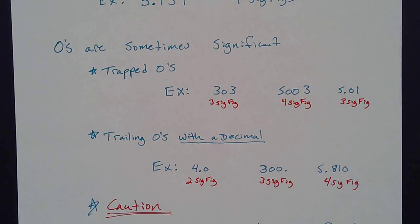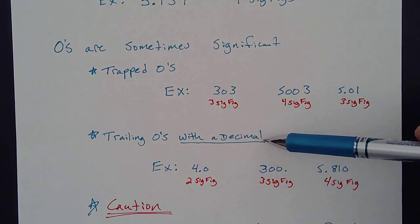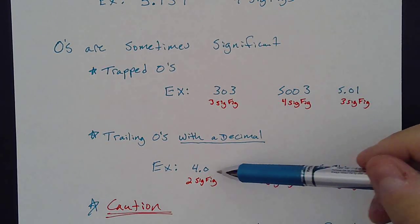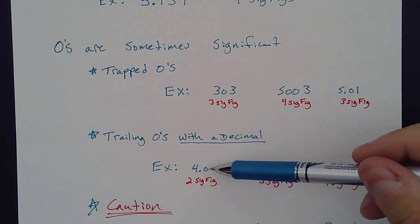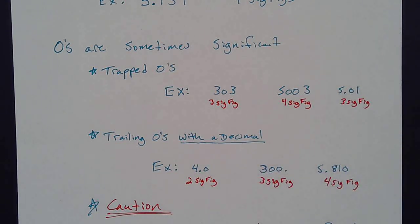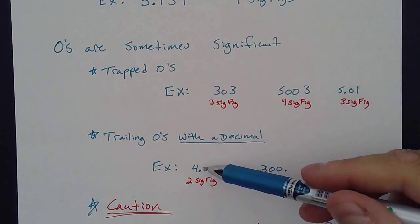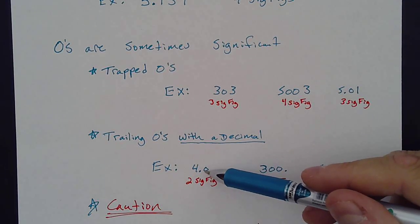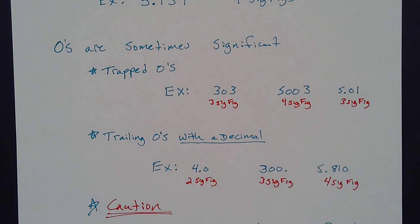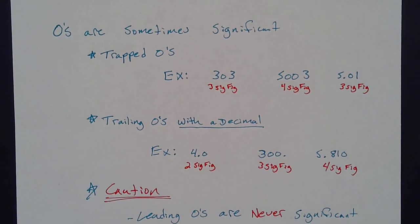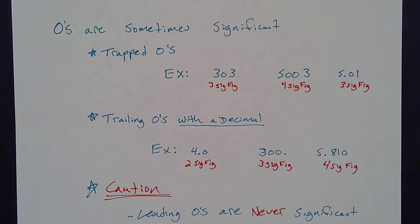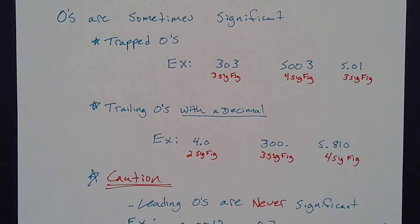But I do want to caution you. So first, if there is not a decimal place, these zeros are no longer significant. So if this was just 40, there would be one sig fig. There's only one thing. There's a trailing zero, but there's no decimal point. So therefore, it wouldn't be significant anymore. And another type that this one's the one that trips people up the most, I think, leading zeros are never significant. So let's look at some examples of those real quick.